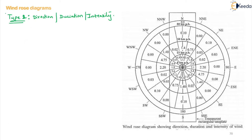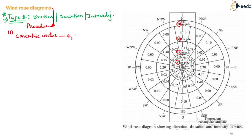Now moving on to the construction — how do we construct the Type 2 wind rose diagram? First, concentric circles with radii corresponding to 6, 25, 50, and 80 kmph are drawn to scale. In the table we have taken ranges between 6 to 25, 25 to 50, and 50 to 80 kmph, so these concentric circles represent the wind velocity and must be drawn to a particular scale.